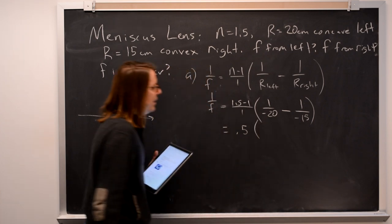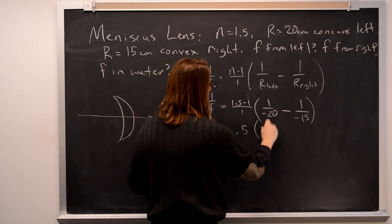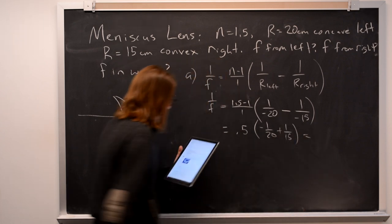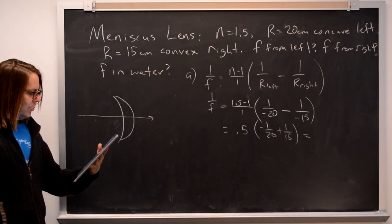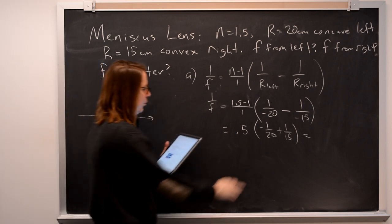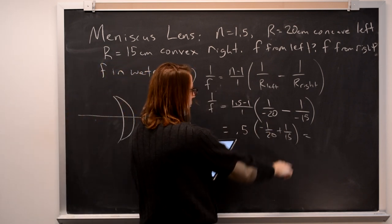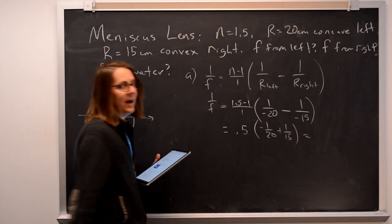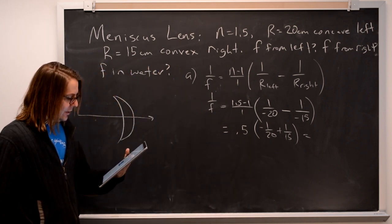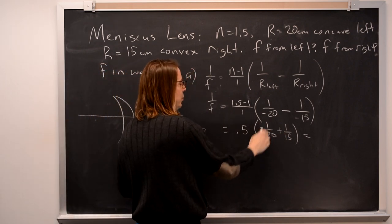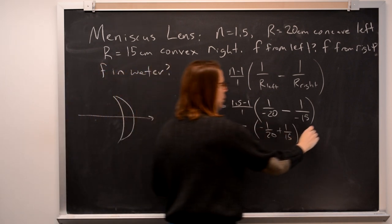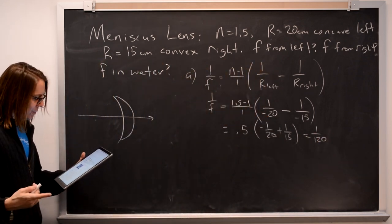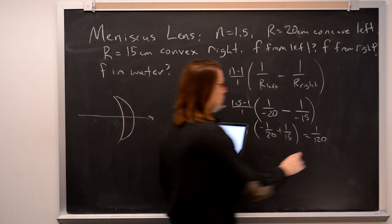That's why keeping that sign is critical. This becomes 1.5, and this becomes minus 1 over 20 plus 1 over 15. And if you do the numbers, this reduces to minus 3 over 60 and plus 4 over 60 with 60 as a common denominator. And this becomes a half. So 4 over 60 minus 3 over 60 is 1 over 60, times a half is 1 over 120. So the focal length is 120 centimeters.